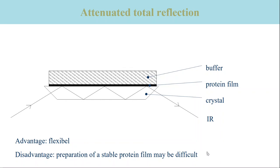The penetration depth is on the order of the wavelength, which means that the optical thickness of the sample is small enough for measurements in aqueous films. If the protein film is thick enough, the additional buffer layer does not influence the measured spectrum, because the beam does not penetrate that far into the sample.